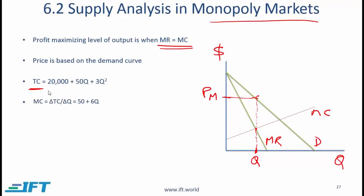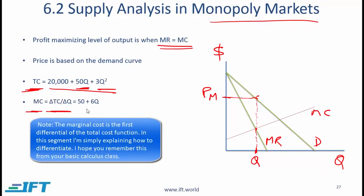The total cost function is given in the curriculum. If you get something like this on the exam, you will not have to derive a total cost curve — it will be given to you. The marginal cost is given by 50 plus 6q. The constant 20,000 disappears. For the 50q term, this is q to the power of 1; bring the exponent down and subtract 1, giving 50. For the 3q squared term, the first differential gives 6q. So marginal cost is 50 plus 6q — this demonstrates how to derive the marginal cost curve from the total cost function.